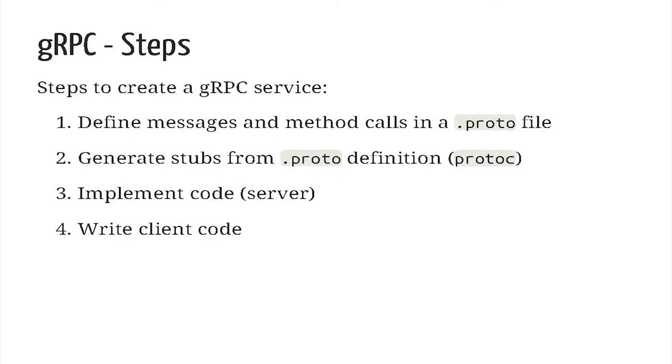In RPC systems, you usually have an interface definition language. By default, gRPC uses something called the proto-file. To create a gRPC system, you define the message in a proto-file — which is the IDL — then you generate stubs from the proto-file through a tool called protoc. There are all sorts of plugins for different languages that you can use with protoc. Then you implement the server code if you're writing the API, or you write the client code based on these imported stubs.